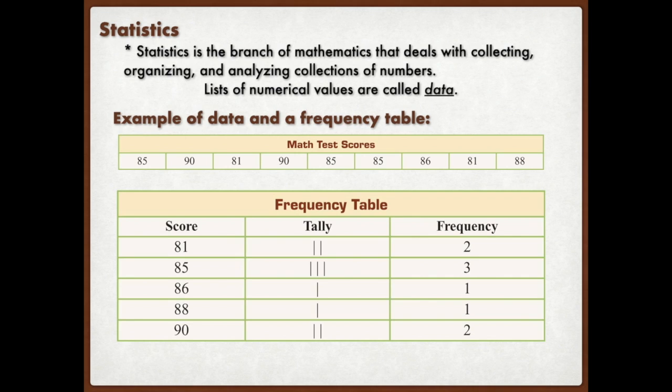Here's an example of the data and a frequency table. So in the first table, we have a collection of math test scores. Below that, we have a frequency table. All a frequency table is is identifying how many times that grade showed up. How many times did the score 81 show up on different math tests? Well, there was a total of two. So if I look at the top table, the third one in is an 81, and the second to last is an 81. So it showed up two times. So the frequency and how often it showed up for 81 is two. How many times did 85 show up? Three. I can count the first one, and the two in the middle, 85. So it showed up three times. That's the frequency.